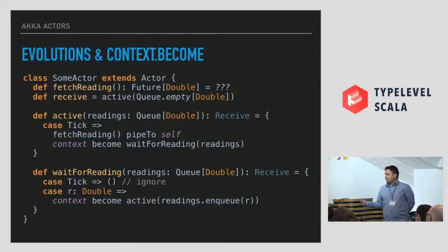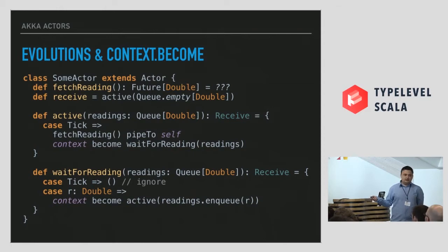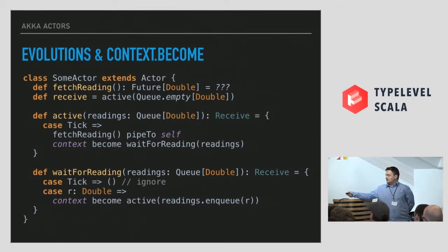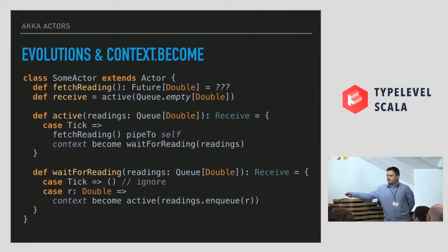Evolutions and context.become: I hate variables and mutable data structures. The way Erlang does it is to evolve the receive function, and we can also do that with Akka. Instead of having mutable state, we can have special receive functions and evolve them with context.become. In this example, 'readings' is no longer mutable — it's passed as an argument to our receive function, and we simply evolve it when we have a new state. This protects you: if you capture 'readings' in a future, at least you won't be able to modify it since it's immutable.